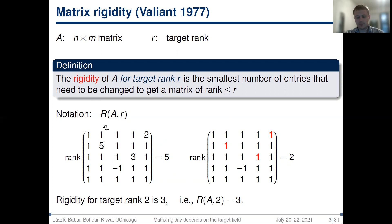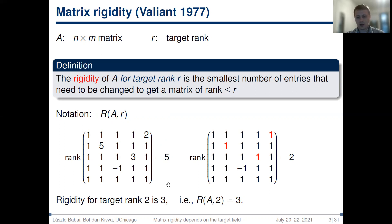Consider the example below. The matrix on the left has rank 5, and in order to get a matrix of rank 2, one needs to change at least three entries. Moreover, three entries suffice: namely, if we change 5, 3, and 2 to 1, 1, and 1, we get a matrix of rank 2. So we can write that the rigidity of this matrix for target rank 2 is 3.